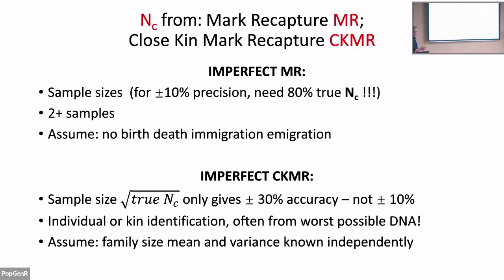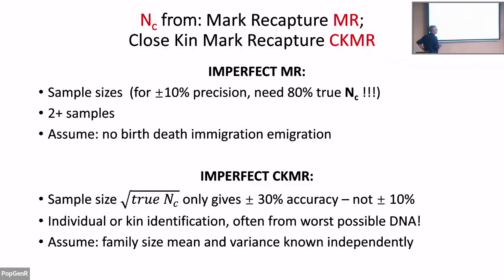Let's go through the two existing methods. For mark-recapture, achieving plus-or-minus 10% precision requires two or more samples, and each time you have to capture at least 80% of the true census size — something no one can realistically do, so this always has very large error bars. You also have to assume that between your captures there are no births, deaths, immigration, or emigration, or else apply a lot of uncertain fixes when you don't know those figures.